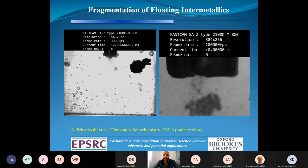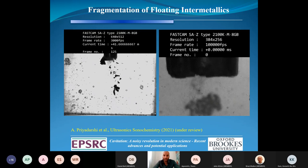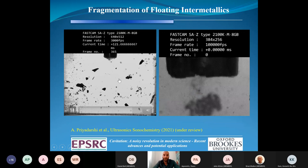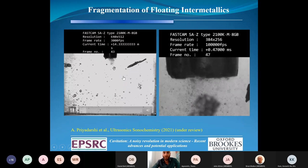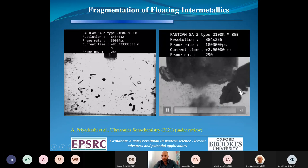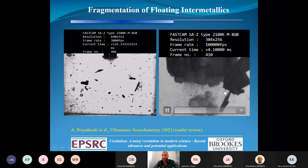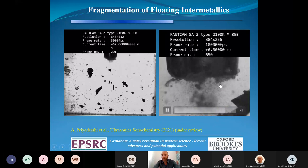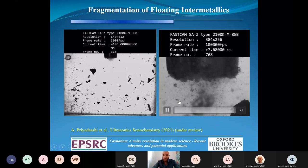This was for fixed intermetallics. Next, we looked at floating intermetallics, which is what actually happens in a melt where everything is moving. This experiment is performed in water because it's transparent and has similar cavitation behavior to liquid aluminum. The intermetallic approaches the sonotrode, goes back and forth due to the oscillation, and eventually breaks from the bottom — a contactless fragmentation as the particle moves near the cloud of bubbles, near the cavitation zone.